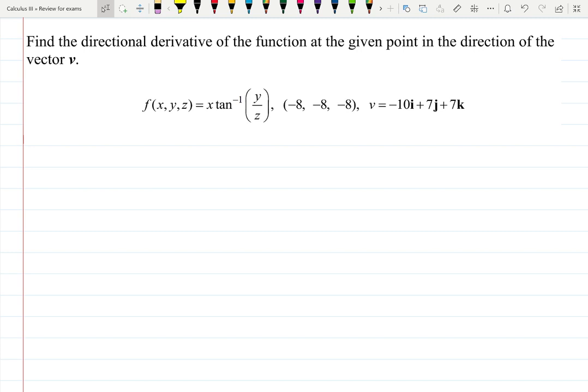Find the directional derivative of the function at the given point in the direction of the vector v, which is x times arctangent of y over z, at the point (-8, -8, -8), v is -10i plus 7j plus 7k.